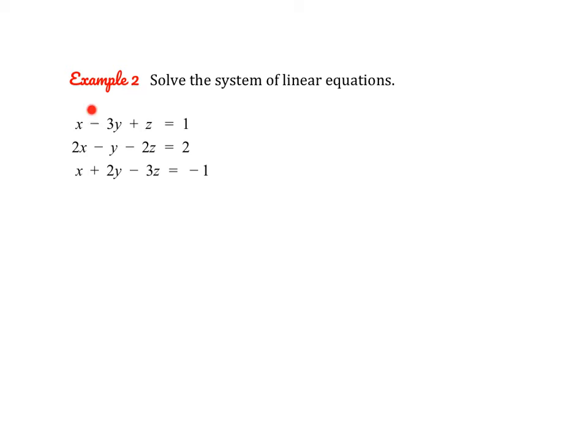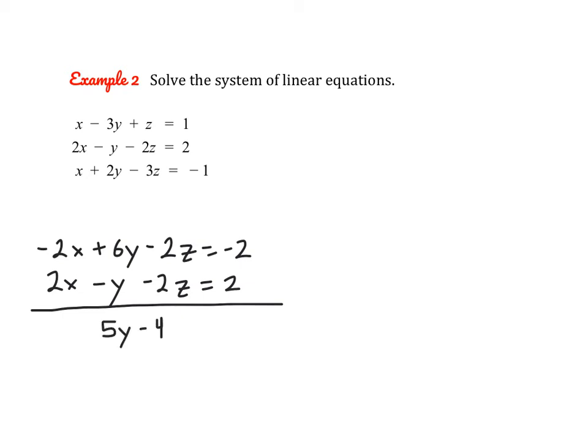So I can use the first and second equations, but I'm going to need to multiply that first equation by negative 2. So we get negative 2x plus 6y minus 2z equals negative 2. But our second equation can stay the same. So when we add vertically, we get 5y minus 4z equals 0. So I'm going to write that up here to the right.